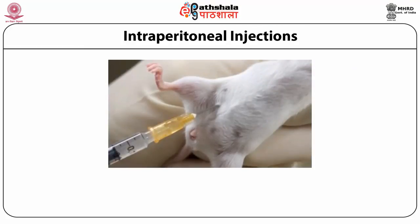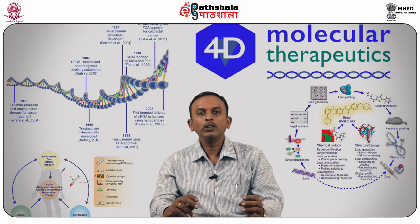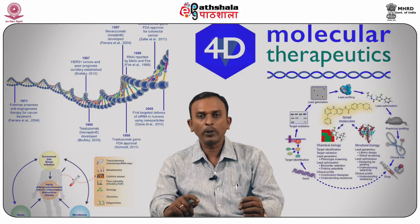After identification, the next important step is injection procedures. We need to inject drugs either intraperitoneally, subcutaneously, intradermally, or intravenously. The most common procedure in the mouse model is intraperitoneal injection. The area should always be disinfected, and the angle of injection is 30 to 45 degrees, caudal to the umbilicus and lateral to the midline.